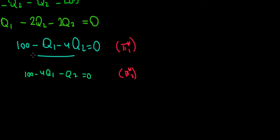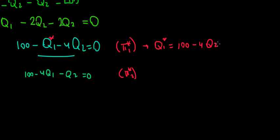Recall from the previous video: these are the profit-maximizing conditions we found for firm 1 and firm 2. Because we are maximizing profit for the first company, we're interested in the optimal quantity it should produce. That gives us Q1 = 100 - 4Q2. Using the same logic for the second company, the optimal quantity is Q2 = 100 - 4Q1.